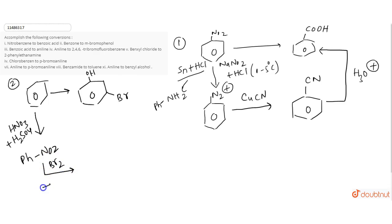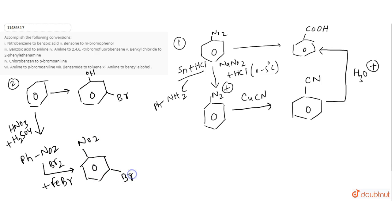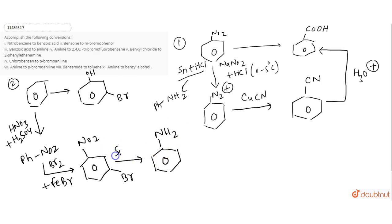Then bromination using Br2 plus FeBr3 — since NO2 is an electron-withdrawing group, Br will be added at the meta position. Then we convert NO2 into NH2 using Sn/HCl, while the bromine remains fixed.